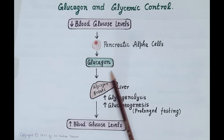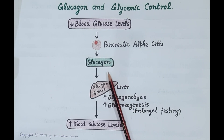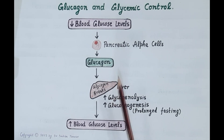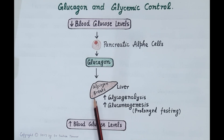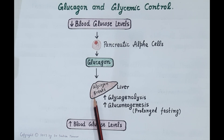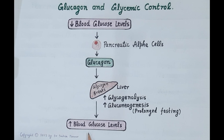Glucagon promotes glycogenolysis, and therefore glycogen stored in the liver breaks down to glucose, and this glucose is released into the blood.